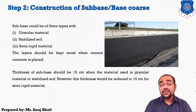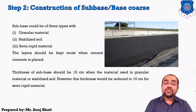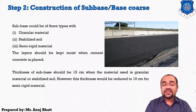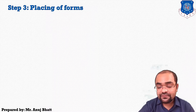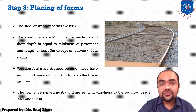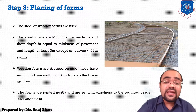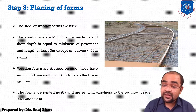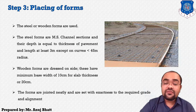The subbase should be constructed in accordance with the respective specification, with surface finish to the required lines, levels, and cross section. The layer should be kept moist when the cement concrete is placed. Step 3 is the placing of formwork. Steel or wooden formwork is generally used. Steel formwork consists of mild steel channel sections with depth equal to the pavement thickness and length of at least 3 meters, except where curves with radius less than 45 meters are provided.